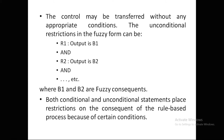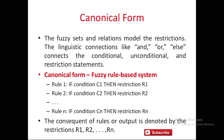The canonical form means that fuzzy sets and relations model the restrictions. Linguistic connectives like AND, OR, and ELSE connect the conditions. The canonical form of a fuzzy rule-based system looks like: Rule 1 — if condition C1 then restriction R1; Rule 2 — if condition C2 then restriction R2; and so on. The consequents of rules and output are denoted by restrictions R1, R2, through Rn.